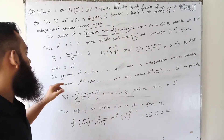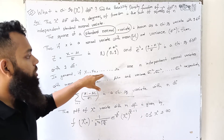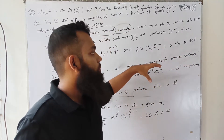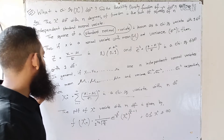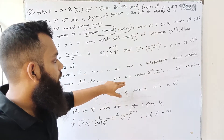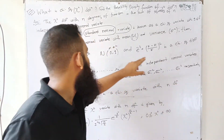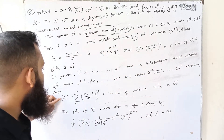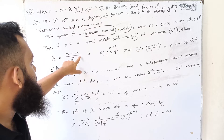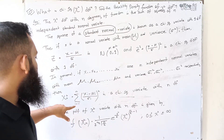In general, suppose x1, x2, ..., xn are independent normal variables with means mu1, mu2, ..., mun and variances sigma1 squared, sigma2 squared, ..., sigman squared respectively. Then chi-n squared equals the sum from i=1 to n of (xi minus mui divided by sigmai) whole squared, where each term is a squared standard normal variate.